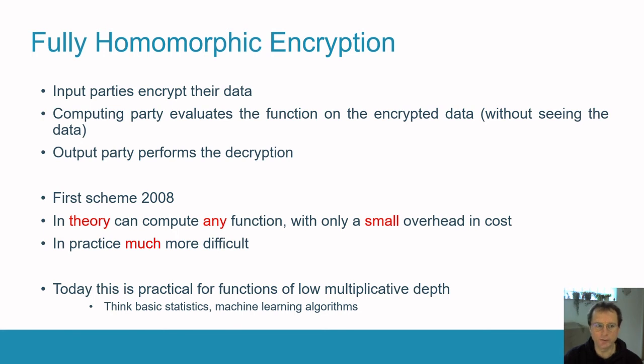Let's do a summary. Fully homomorphic encryption: the input parties encrypt their data, the computing parties perform the evaluation in the encrypted domain, and then an output party does decryption. The first scheme was like a holy grail since the mid-70s; the first scheme came along in 2008. In theory, you can compute any function with only a very small overhead and cost. But in practice, the overhead has a big O constant in it, so that's a problem.